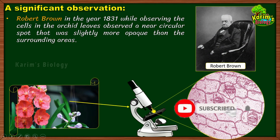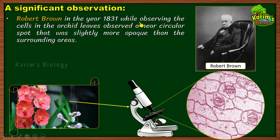Now let us find out about the story of the nucleus and who discovered it. The discovery of the nucleus was a significant observation because the nucleus controls the entire cell — that is why its discovery was so significant. It was in the year 1831 that a scientist by the name Robert Brown made this discovery. In 1831, he was observing cells in orchid leaves. He took a thin peel of the orchid leaf and kept it under the microscope and observed.